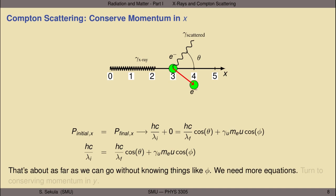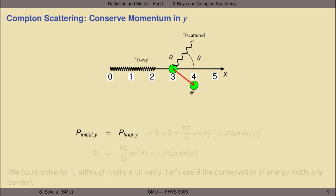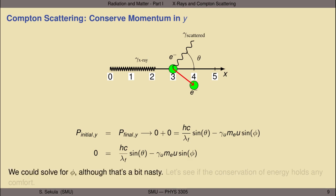We turn to conserving momentum in the y direction. The initial total momentum in y is zero — the x-ray moves entirely along the x-axis and the electron has no velocity. The final state has two pieces: the positive vertical component of the scattered light quantum and the negative vertical component of the scattered electron. Consolidating, we have an equation with sines of the two scattering angles. We could solve for sin(φ), but it's already looking algebraically challenging.